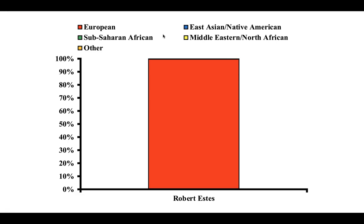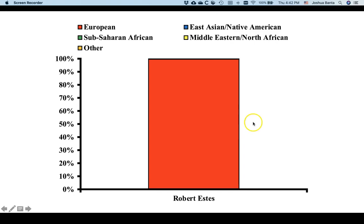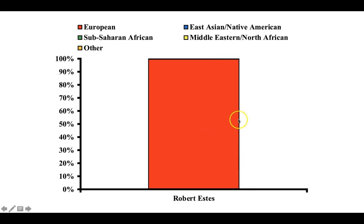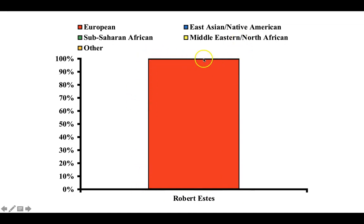Or you can represent the different components of ancestry as a bar graph. Looking at this bar graph representing Roberta, we see that nearly 100% of her DNA is European in origin.